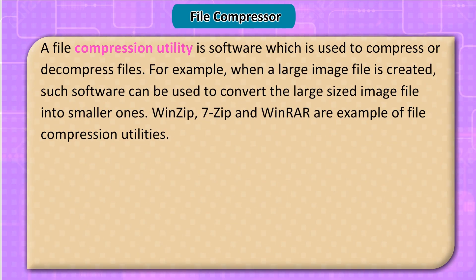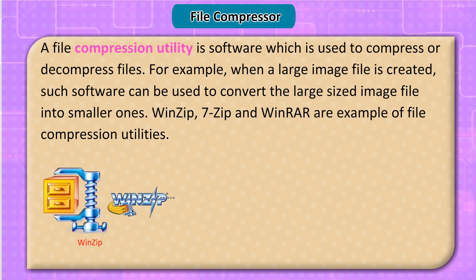A File Compression utility is software used to compress or decompress files. For example, when a large image file is created, such software can convert it into a smaller file. WinZip, 7-Zip, and WinRAR are examples of file compression utilities.